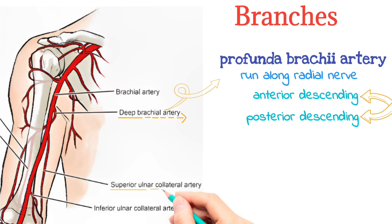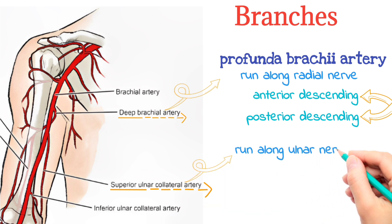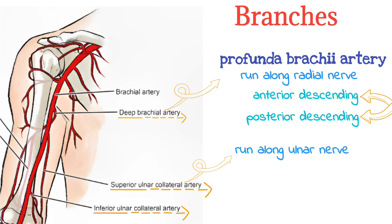Superior ulnar collateral artery — the second branch of the brachial artery. It supplies blood to the triceps and part of the elbow joint. It runs alongside the ulnar nerve near the elbow. Inferior ulnar collateral artery — the third branch of the brachial artery, starting near the bottom of the brachial artery. It helps supply the biceps and brachial muscles.